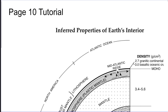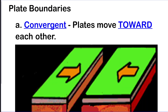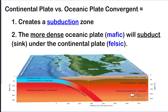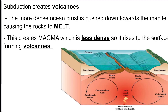We have all our plate boundaries. Convergent boundaries are when plates move towards each other. For continental plate versus oceanic plate, you get a subduction zone because the denser oceanic crust — with a density of 3.0 — sinks underneath the continental plate, which has a density of 2.7. That melts the rock, which then comes up as volcanoes.